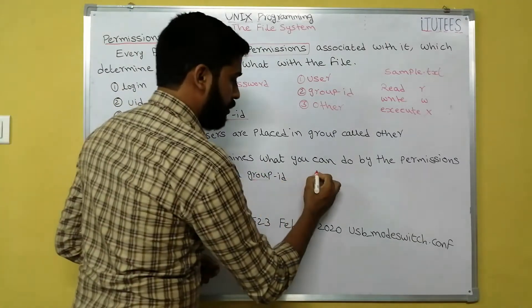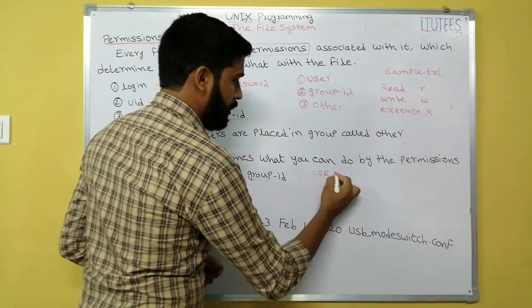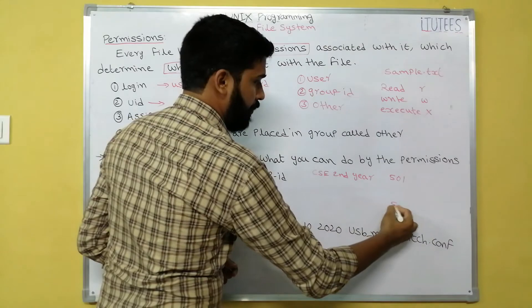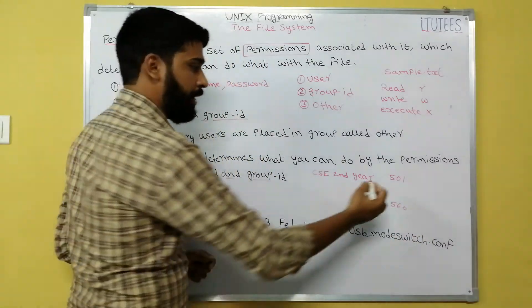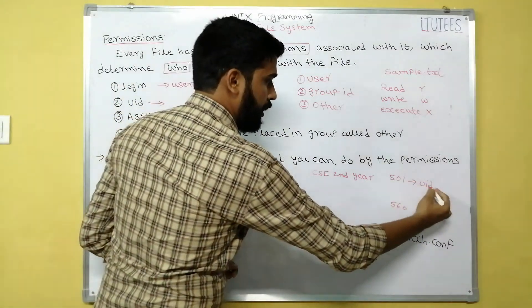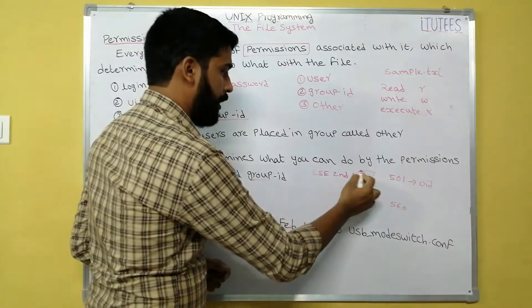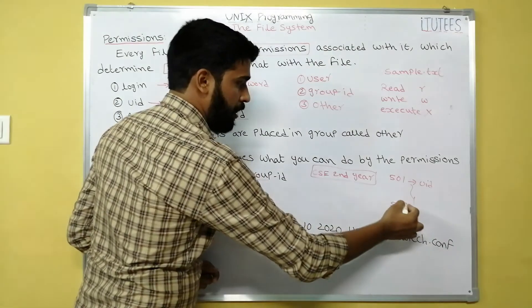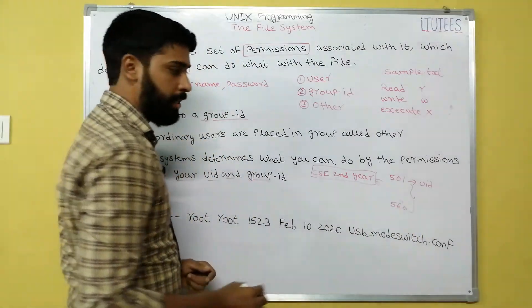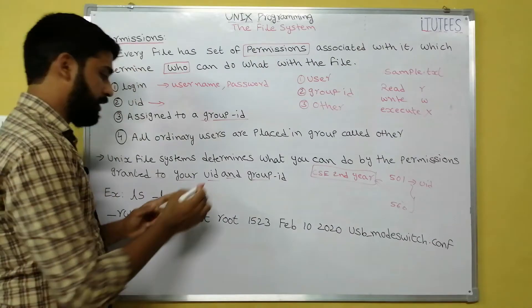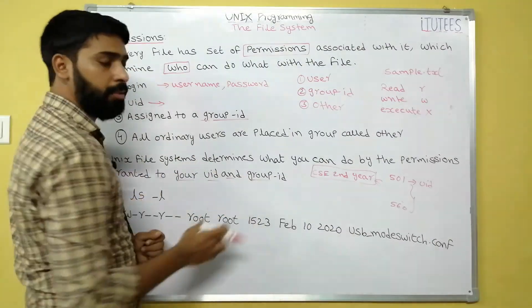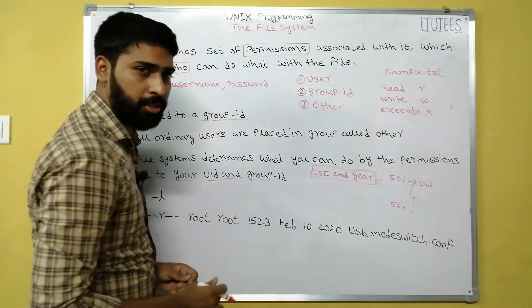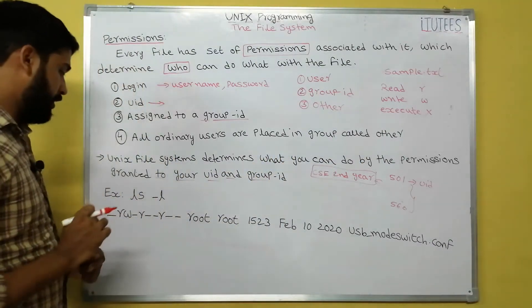For example, if you belong to CSC second year, the user IDs might be numbered 501 to 560. So 501 is one user ID, and that user belongs to the group 'CSC second year'. All 60 members belong to CSC second year and individually have one user ID. Based on UID and group ID, the Unix system determines what you can do.